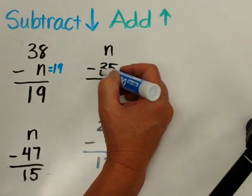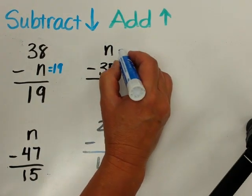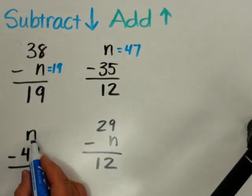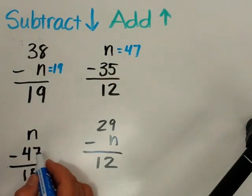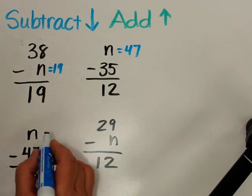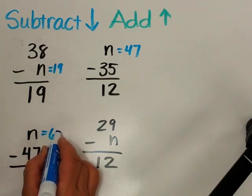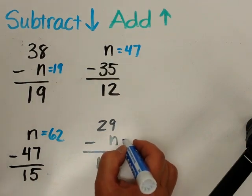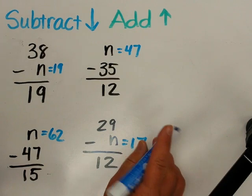Missing number minus 35, n equals 47. n, missing number, subtract 47, the missing number is 62. And n subtract missing number equals 12, the answer is 17.